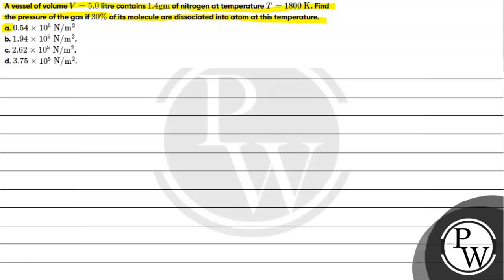Option A: 0.54 × 10^5 N/m². Option B: 1.94 × 10^5 N/m². Option C: 2.62 × 10^5 N/m². Option D: 3.75 × 10^5 N/m².